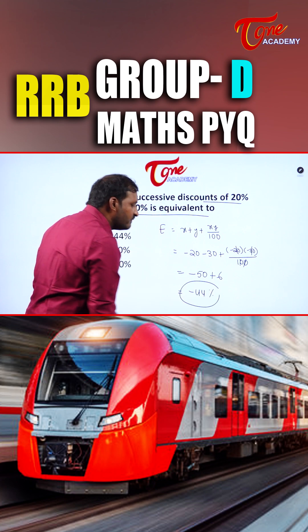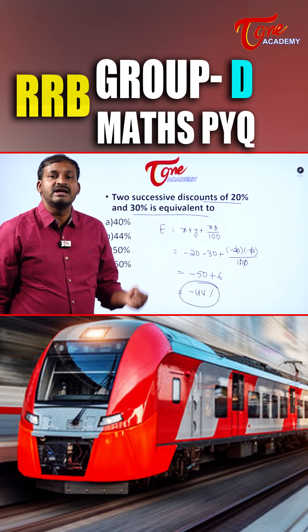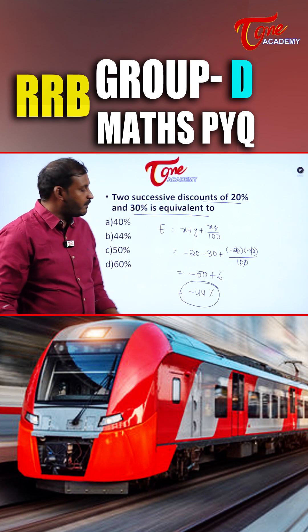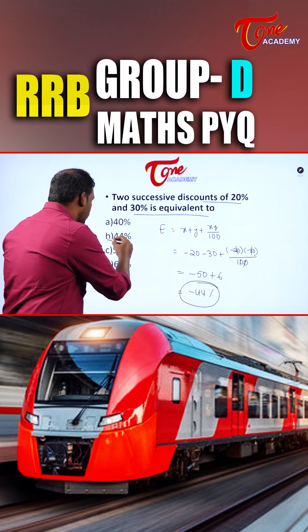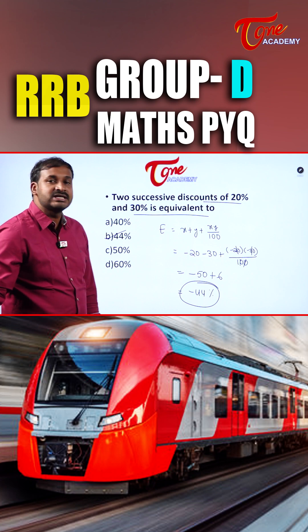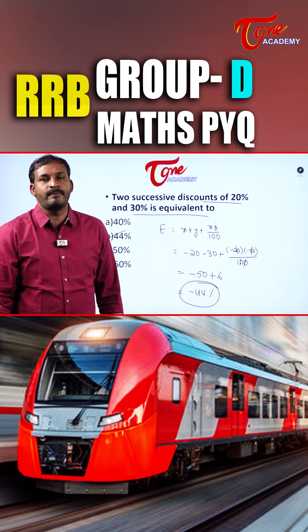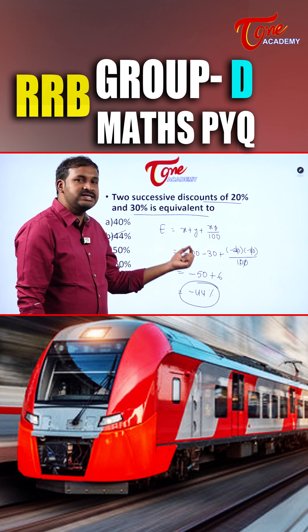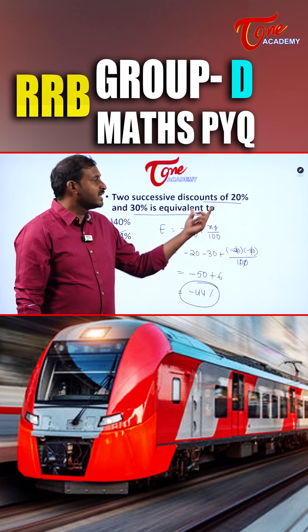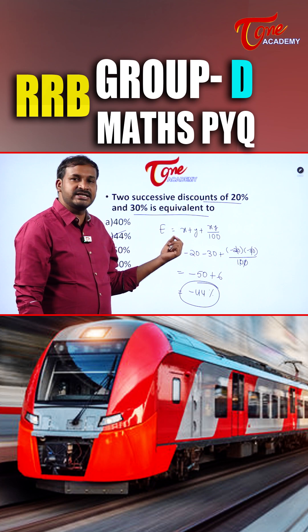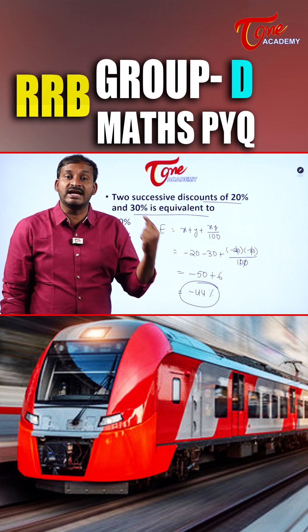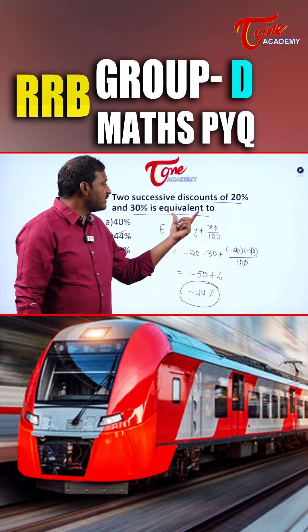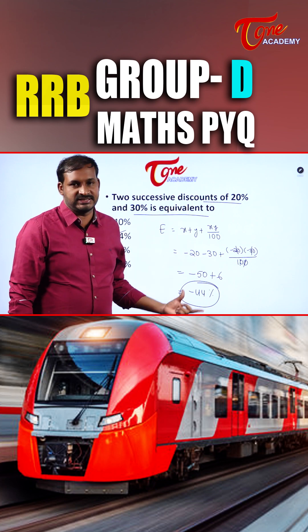That means what is the discount we are getting here? 44% discount. So our answer is 44% here. This is a very easy problem. In each and every examination, you can see at least one question of this type.